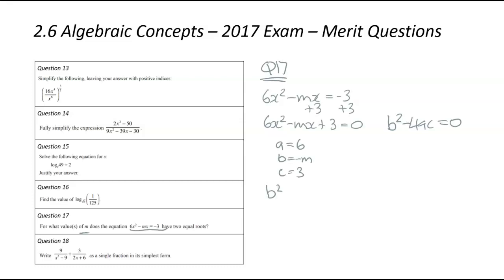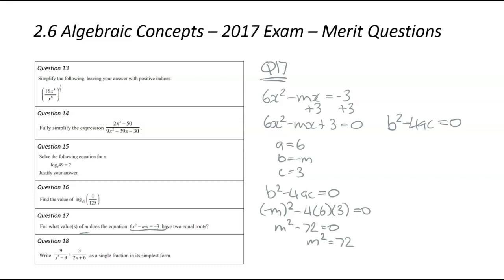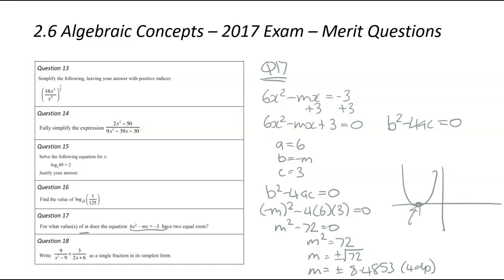We know b squared minus 4ac must equal 0 — that's called the discriminant. So: (negative m) squared minus 4 times 6 times 3 equals 0, giving m squared minus 72 equals 0. Solving: m squared equals 72, so m equals plus or minus the square root of 72, which is approximately plus or minus 8.4853. So when m is plus or minus the square root of 72, our parabola will be sitting exactly on the x-axis with two equal roots.